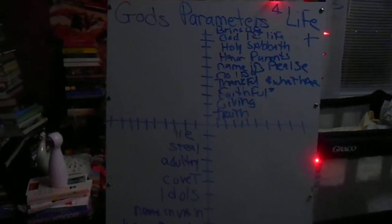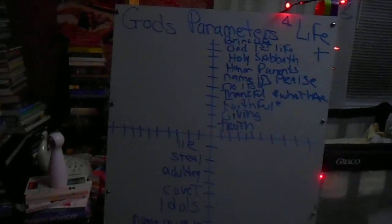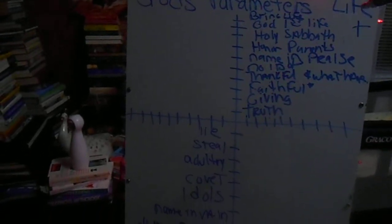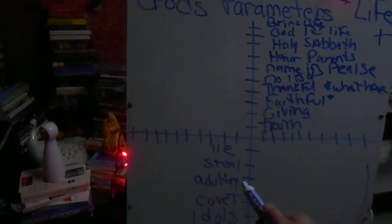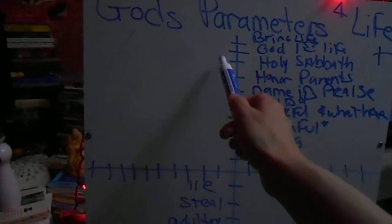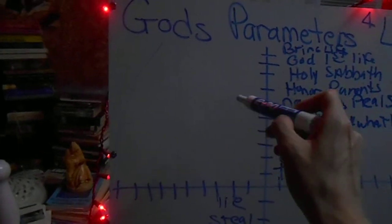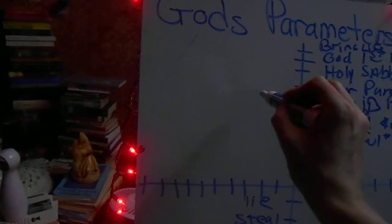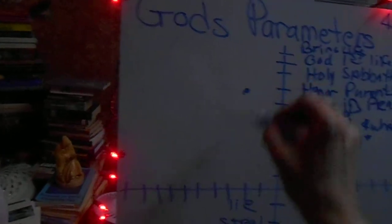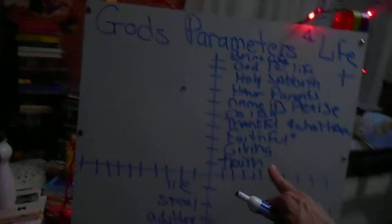There you have it, folks. Narrow is the way that leads to life. Wide and broad — that's the way that leads to death. Because if you do all these good things up here, but you steal — unrepentant stealing sin — you can honor your parents all you want, but if you steal, you're still going to end up over here. You could tell the truth all day, but if you desecrate the sabbath, you're going to end up over there.